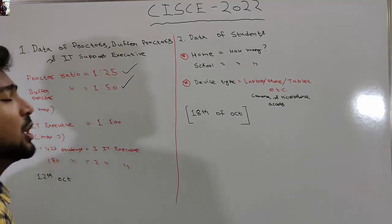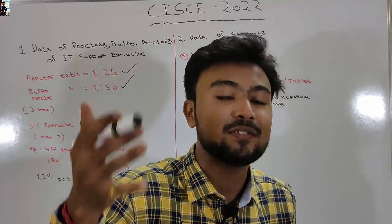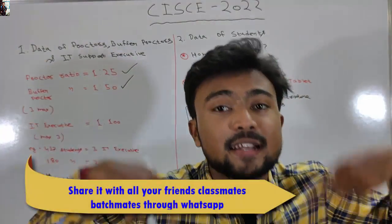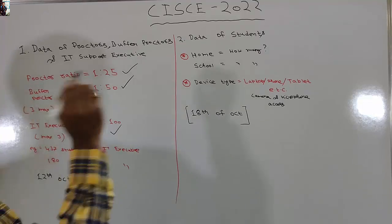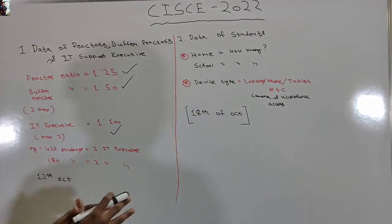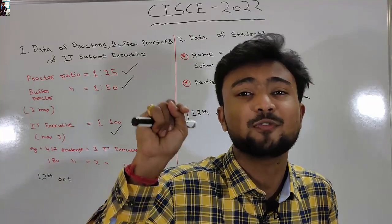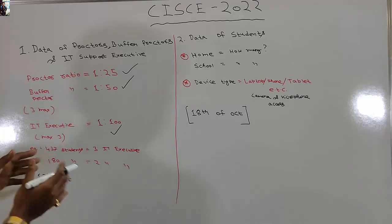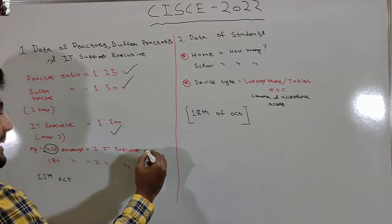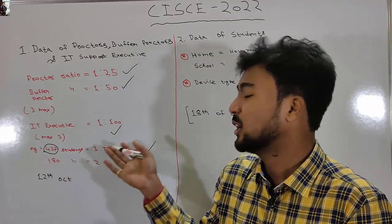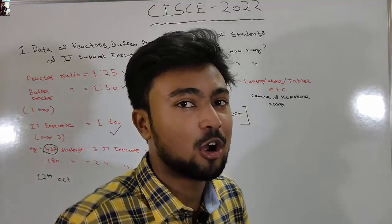What do IT executives do? They are the ones monitoring and supporting proctors and buffer proctors. If there are any IT-related issues, the IT executive handles them. The ratio is one IT executive for every 100 students, and the maximum number of IT executives per school is three. For example, if your school has 437 students, your school can only have 3 IT executives. If your school has 180 students, only 2 IT executives are needed.